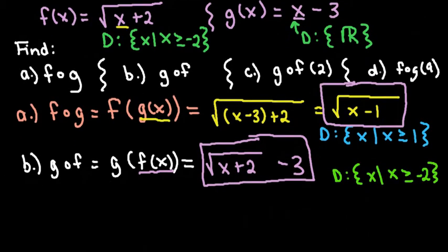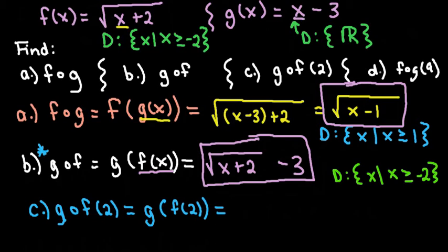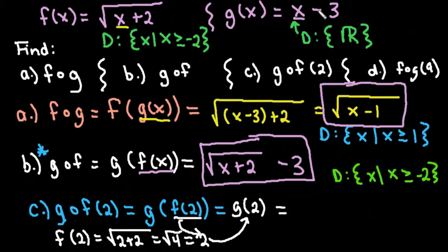For the last two, you can do it two ways: either start from scratch and plug in your value, or plug it into the composite equation you've already found. I'm going to pretend we're starting from scratch. For g of f of 2, we first find f of 2: the square root of 2 plus 2 equals the square root of 4, which is 2. Then we take that output and plug it into the g equation: 2 minus 3 gives negative 1, and that is the final answer.